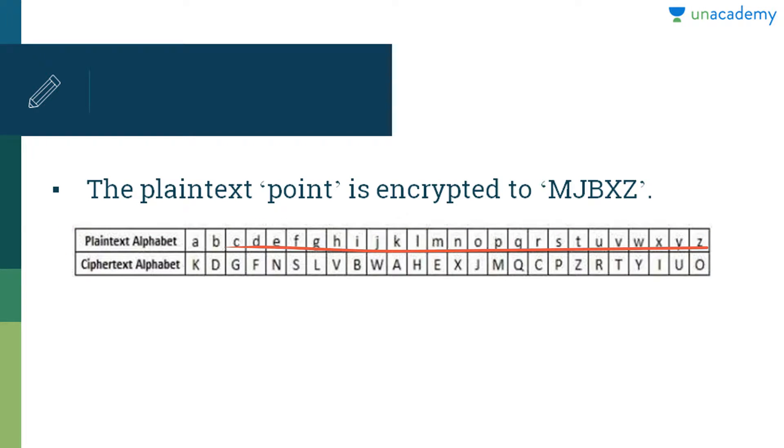Now for encryption, sender replaces each plain text letter by substituting the permutation letter that is directly beneath it. So as I have shown the process through a table visible on the screen, you can see here that your plain text is 'point'. So while encrypting,